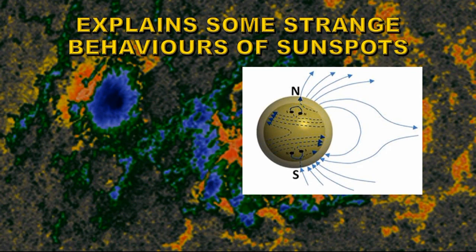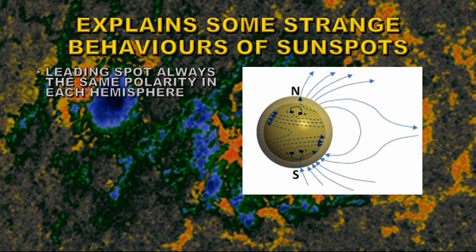This wrapping of the solar magnetic field explains a lot of the strange features about sunspots. For example, that the leading spot in each hemisphere has the same polarity. If you look at the direction at which these field lines are wrapped, they're always slanting the same way towards the equator of the Sun. So in this picture you'd have north as a leading spot and south as a trailing spot, no matter which of these field lines kinks.